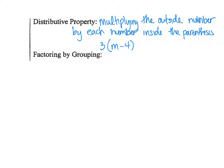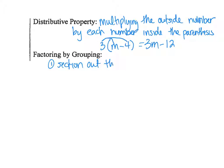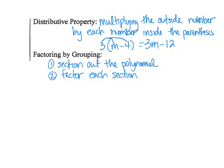It looks like this: 3 times m, 3 times negative 4 — giving us 3m minus 12. Now, factoring by grouping: the first step is we're going to section out the polynomial, and then you're going to factor each section. You might want to put steps one and two in the margin of your paper so you have extra room.